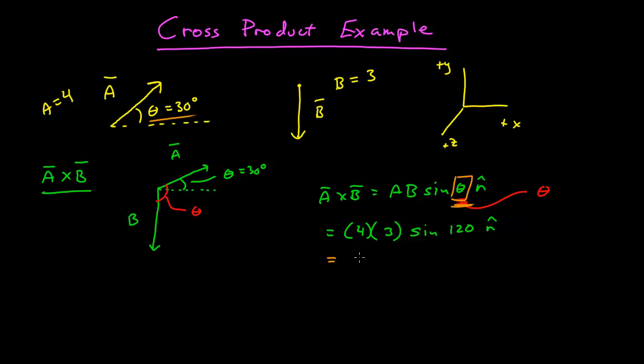So this is 4 times 3, sine of 120 is the square root of 3 over 2. Now, to do the unit vector, since A is the first vector, I point my index finger along A, then I point my middle finger, both from my right hand, along B, and I find that my thumb is pointing into the screen. And if it's into the screen, that would be the negative Z direction. So the unit vector is negative K hat.